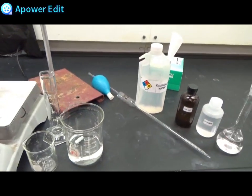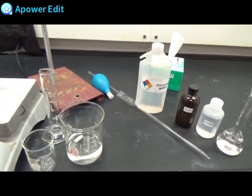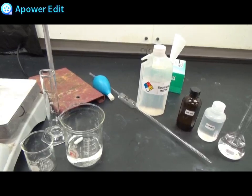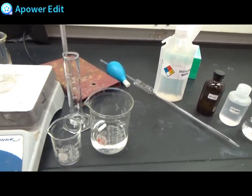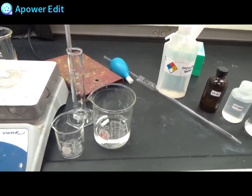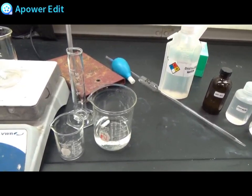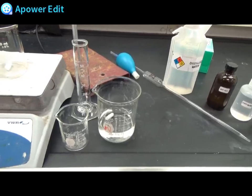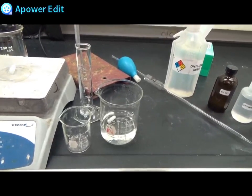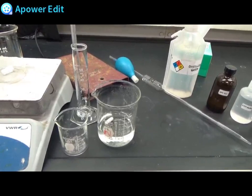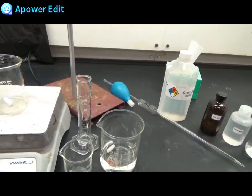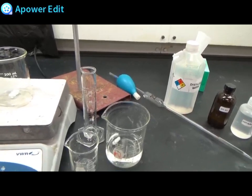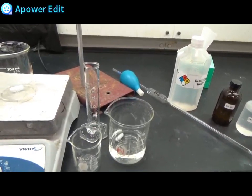The glassware that you will need include a 25 ml volumetric pipette with a rubber bulb, a waste beaker, a 400 ml waste beaker should be enough, a 100 ml beaker to separate your acidic solution from the stock, and a 25 or 50 ml graduated cylinder.